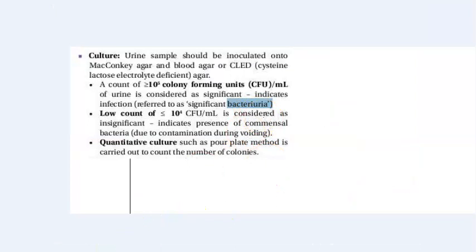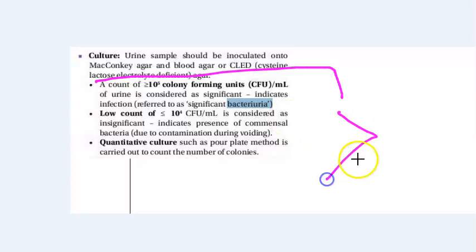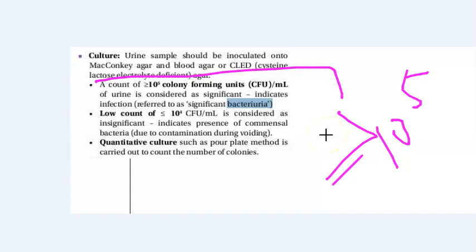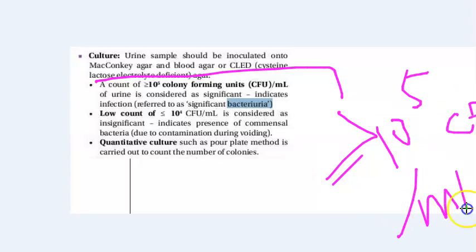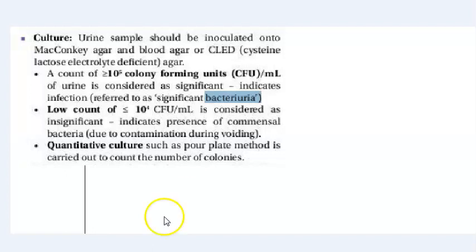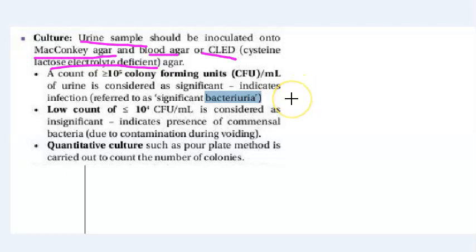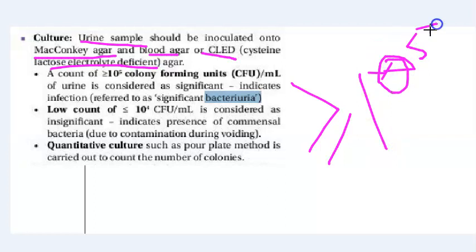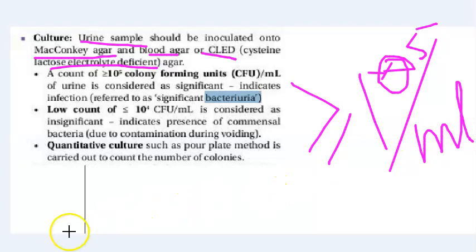Regarding significant bacteriuria in UTI: if the colony count is greater than or equal to 10^5 colony-forming units per ml on culture (on MacConkey, blood agar, or CLED — cysteine lactose electrolyte-deficient agar), it is considered significant bacteriuria.